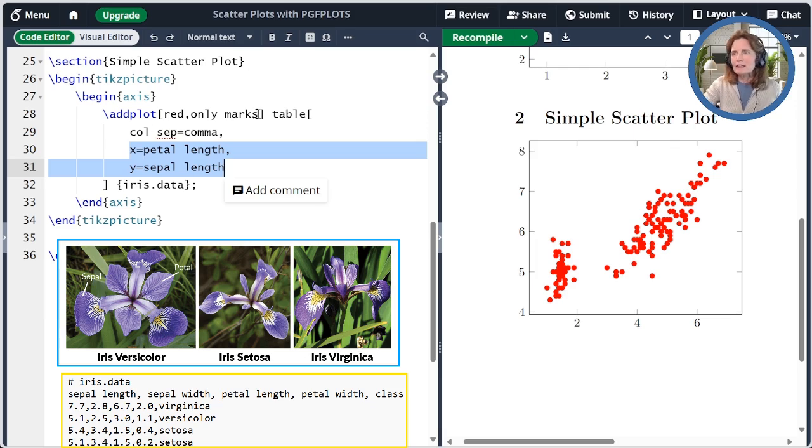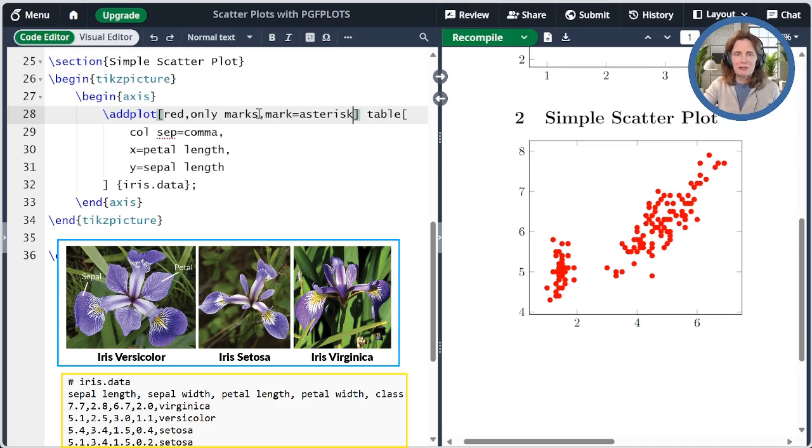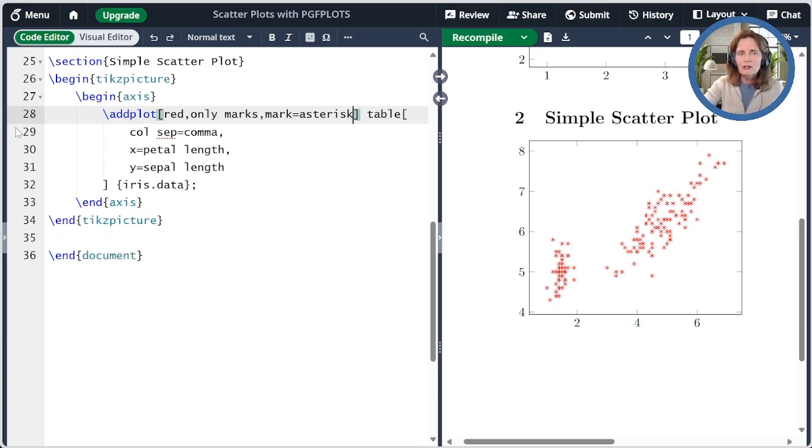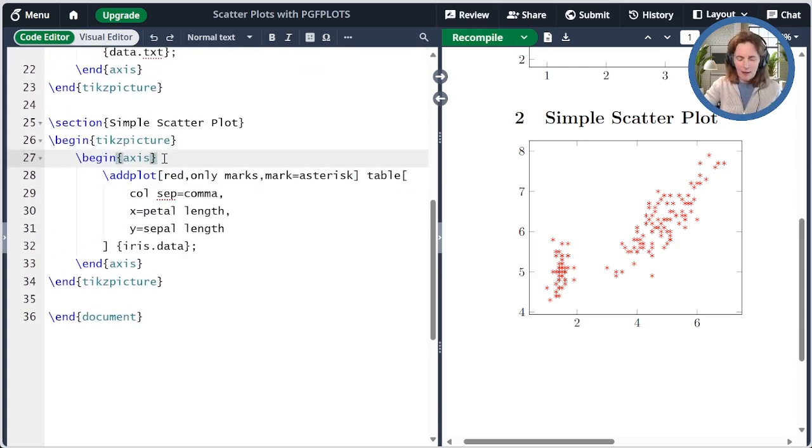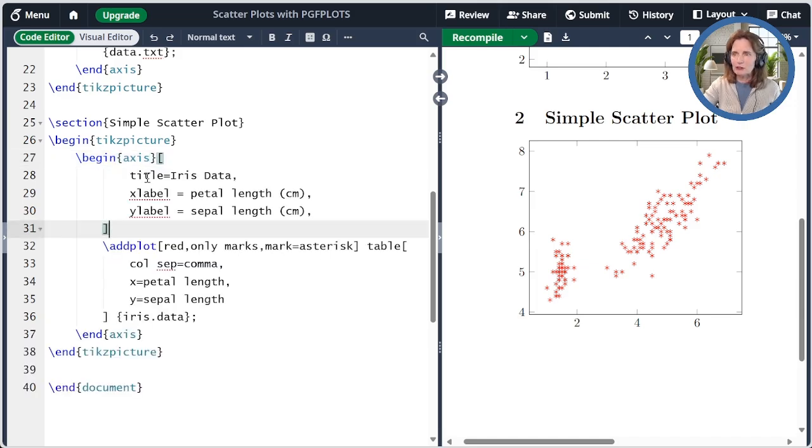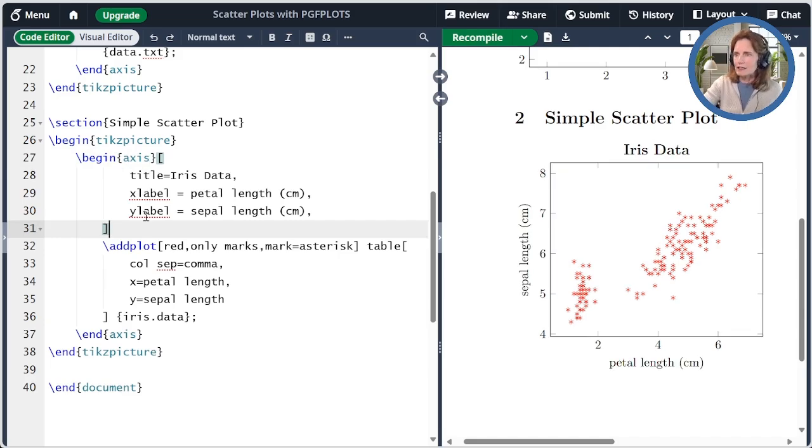I can instead change the mark. So here I'll change it to an actual asterisk. So we use asterisk to be a filled circle. If you want an actual asterisk, you spell it out as a name in the plot option, and then we get an asterisk, as you see here. We'll also go ahead and add a title and axis labels to this. These are options that we put at the axis level, so here I've specified that the title is iris data, and the xlabel and ylabel are given appropriately.